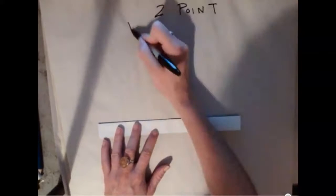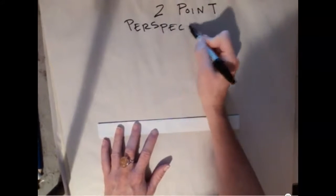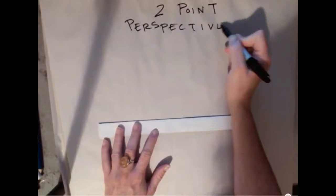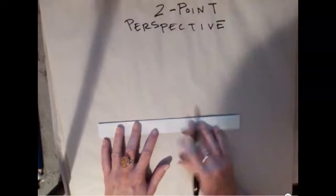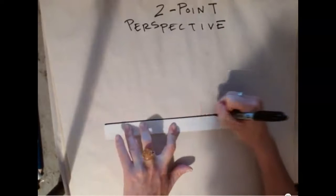All right, so we're going to cover now two-point perspective. We covered one-point perspective, which is great because you have one vanishing line or one vanishing point for your lines to go to.